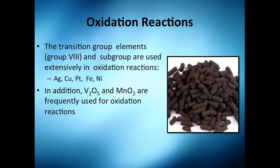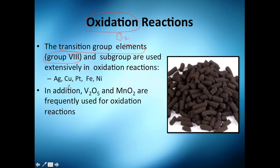Now let's look at oxidation reactions. As the name implies, you're going to oxidize stuff with oxygen. You can use a lot of transition element groups, essentially group 8, such as silver, copper, platinum, iron, and nickel. You can also use vanadium pentoxide or manganese dioxide.